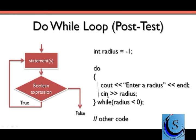This is a nice structure — any time you have a situation where you want to execute a statement or set of statements at least one time, think about using the do-while loop. If you know exactly how many times you want to execute, think about the for loop. If you don't know how many times and you may not even execute the statements even one time, think about using the while loop. So those are our basic three looping structures in C++.